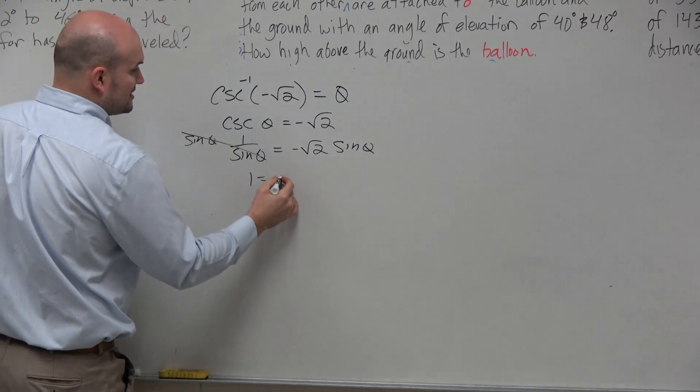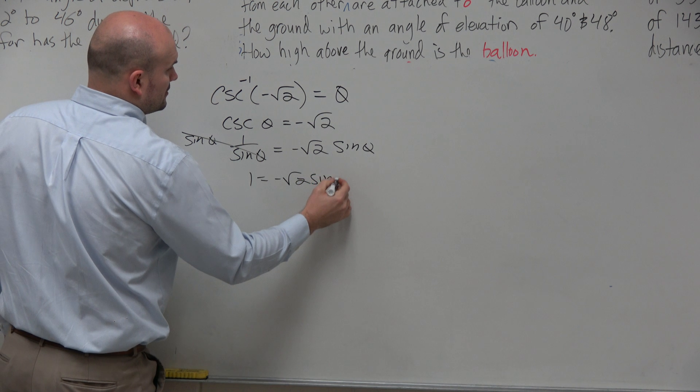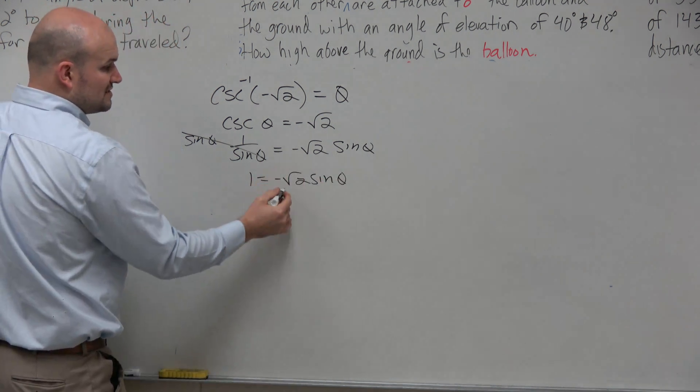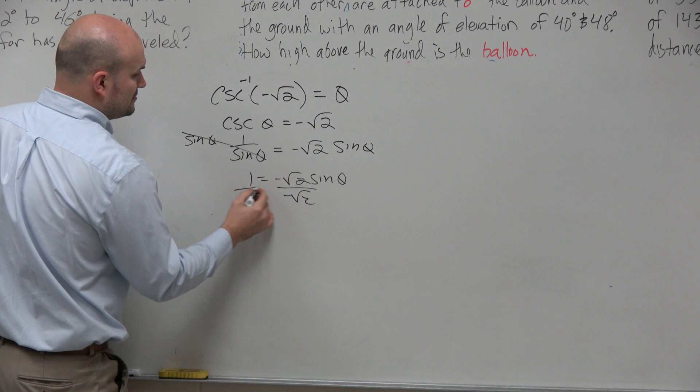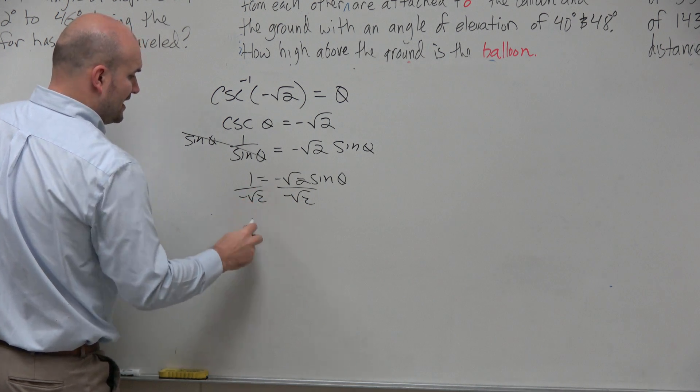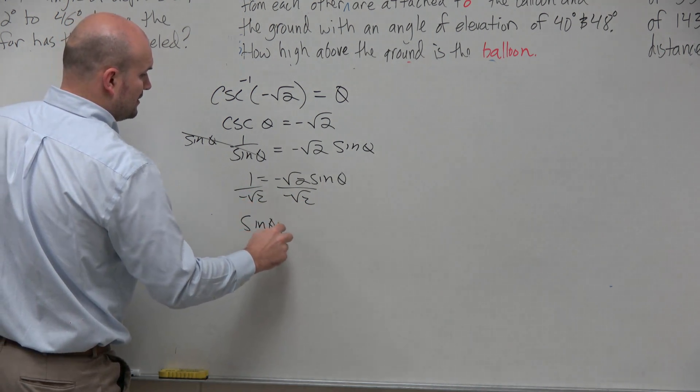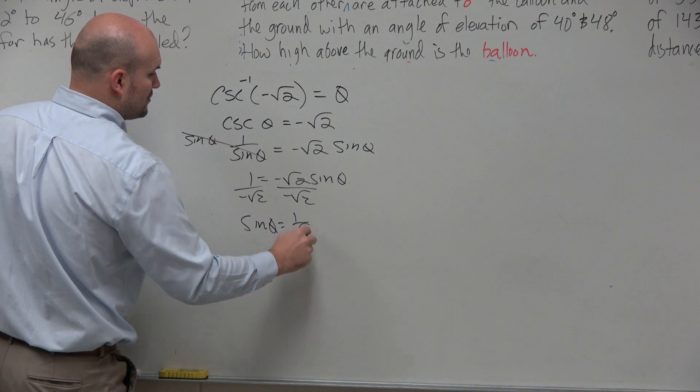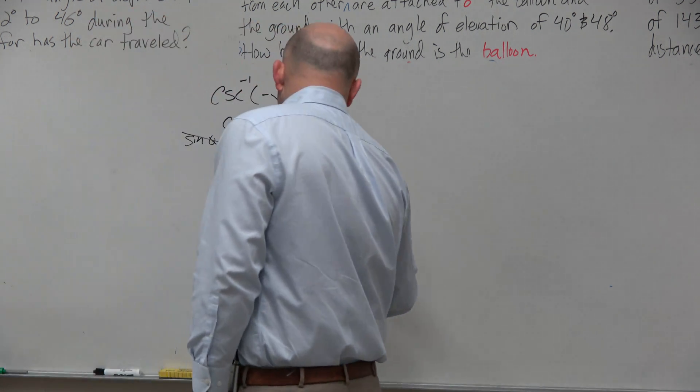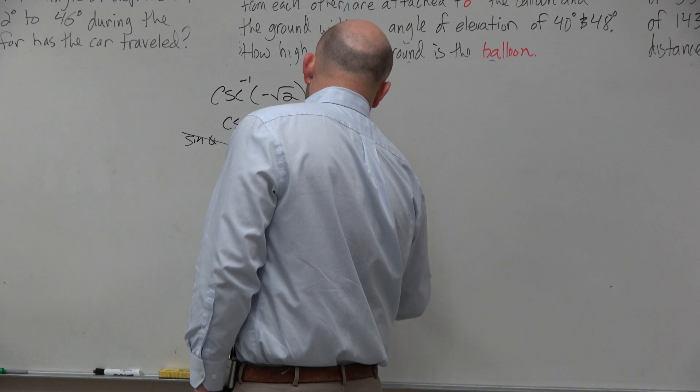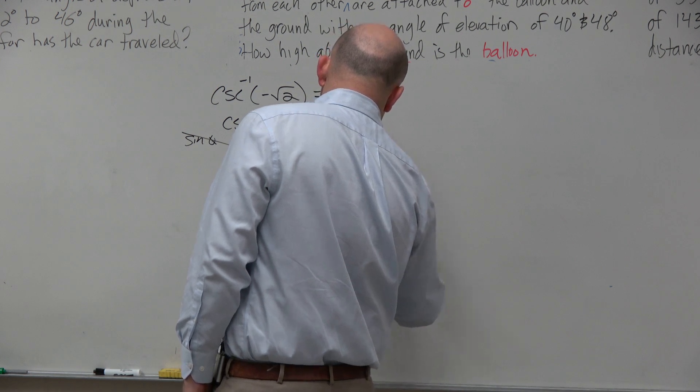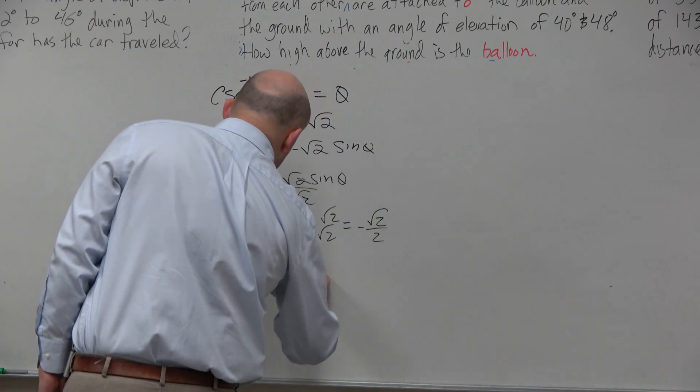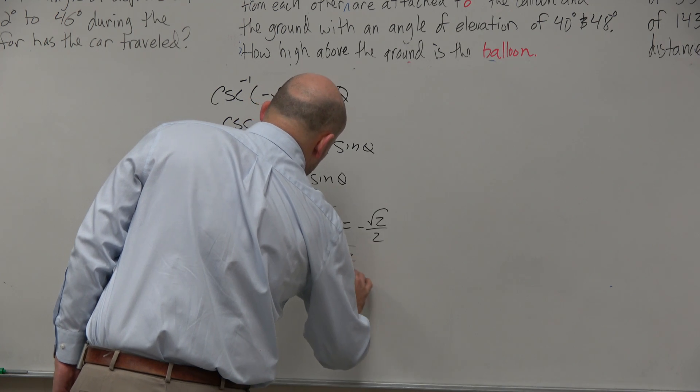So I have 1 equals negative √2 times sine of θ. To solve for sine of θ, I could divide by √2, divide by negative √2. And I have sine of θ equals 1 over negative √2. When you rationalize the denominator, you get negative √2 over 2. So sine of θ equals negative √2 over 2.